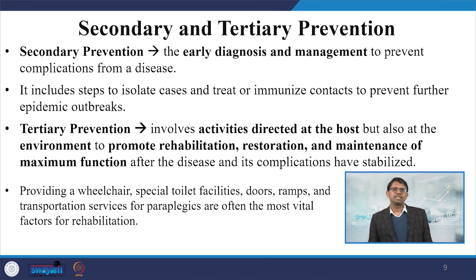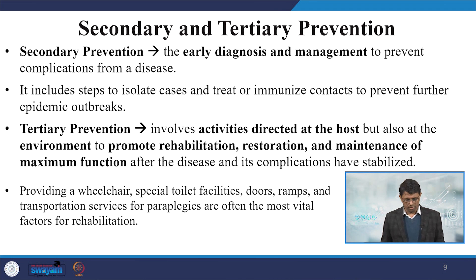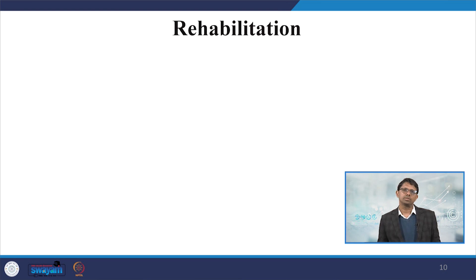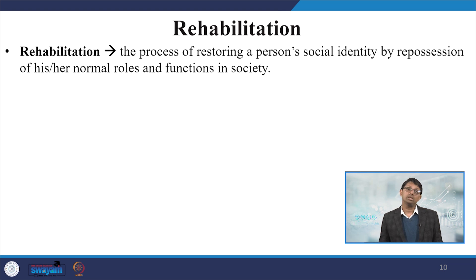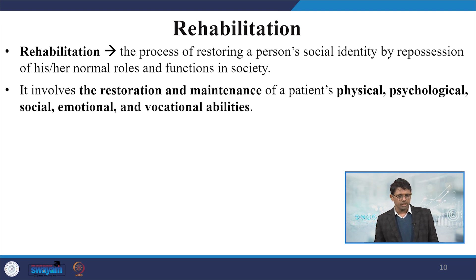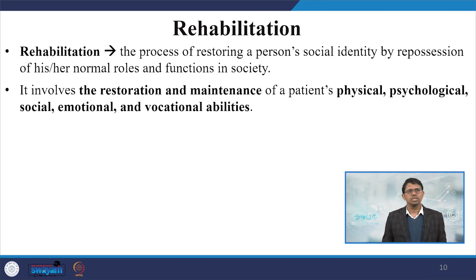For example, providing a wheelchair, special toilet facilities, doors, ramps, and transportation services for paraplegics are often the most vital factors of rehabilitation. Rehabilitation is the process of restoring a person's social identity by repositioning their normal roles and functions in society. It involves the restoration and maintenance of the patient's physical, psychological, social, emotional and vocational abilities.